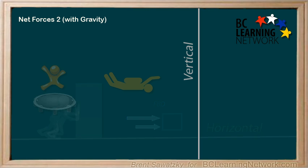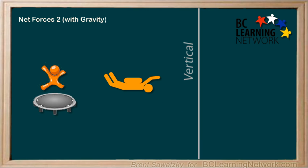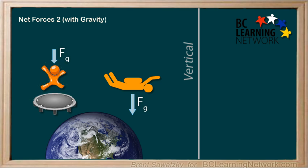We'll consider items falling through the air. When we consider vertical situations, the force we're always including — at least when we're not in space — is the force of gravity. Remember that gravity is the force that pulls any two objects with mass together. The gravity that's noticeable to us is the pull of the earth, a huge mass, on everything around us.